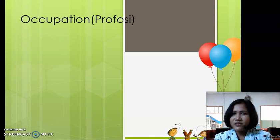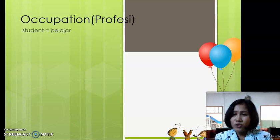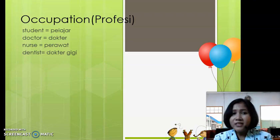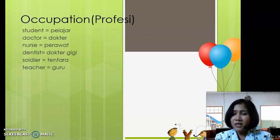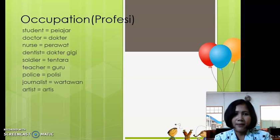Today let's learn about occupation, atau profesi. Around us there are many kinds of jobs. Among them are: student - pelajar, like the children here; doctor - orang yang menyembuhkan orang sakit; nurse - perawat, orang yang membantu dokter merawat pasien di rumah sakit; dentist - dokter gigi; soldier - tentara; teacher - guru, tugasnya mengajar murid di sekolah; and police - kalau polisi perempuan, policewoman; kalau polisi laki-laki, policeman.